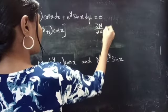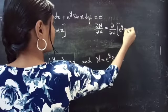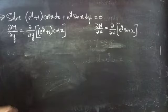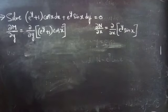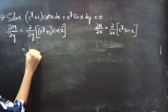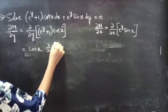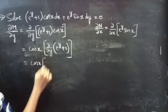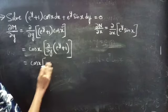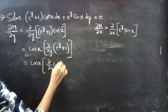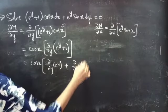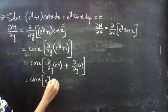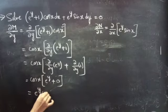And the partial derivative of N with respect to x is the partial derivative with respect to x of e power y sin x. Since we are differentiating with respect to y, we consider x as constant, so cos x is constant. We write: cos x into partial derivative with respect to y of e power y plus 1. The derivative of e power y with respect to y is e power y, and the derivative of the constant 1 is 0. So this equals e power y into cos x.